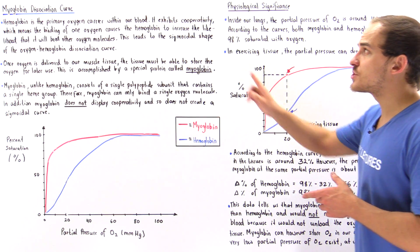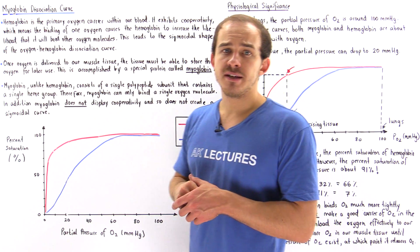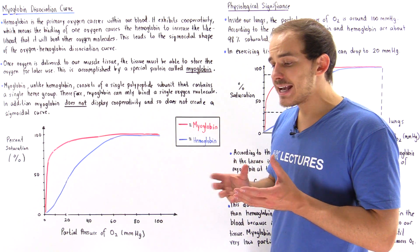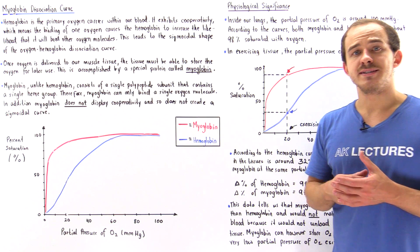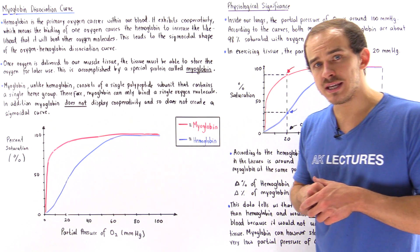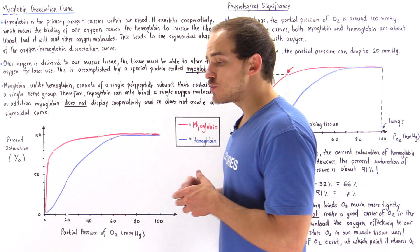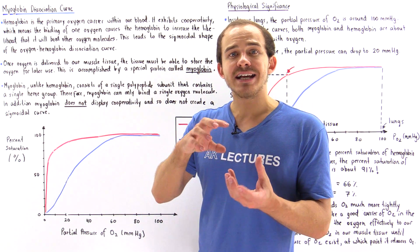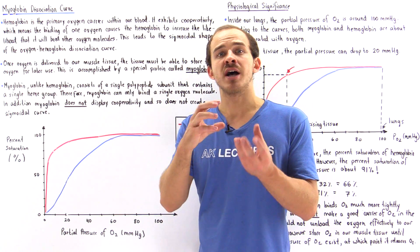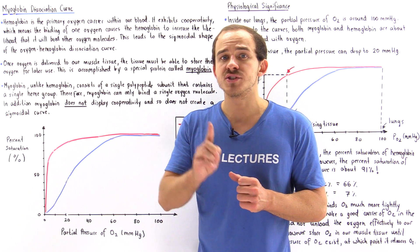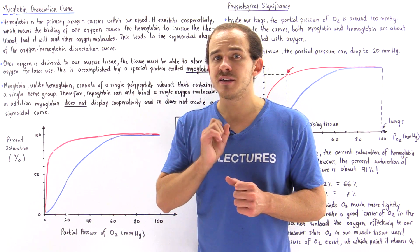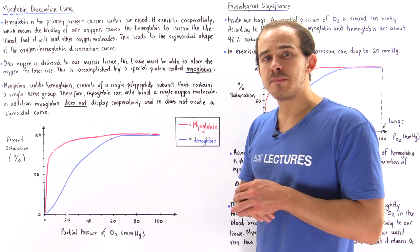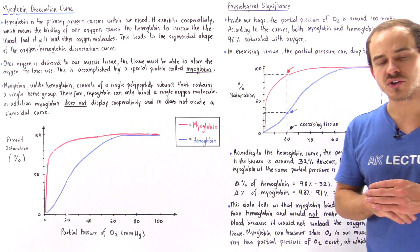our hemoglobin displays something called cooperativity. What that means is if we take a fully unsaturated deoxyhemoglobin protein and one of the heme groups accepts an oxygen molecule, then that will create a conformational change in the entire structure, and that will cause the other 3 unoccupied heme groups to become much more likely to accept additional oxygen molecules.